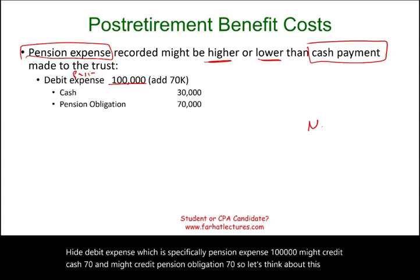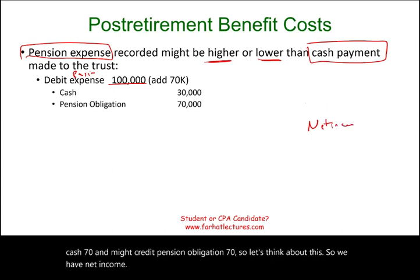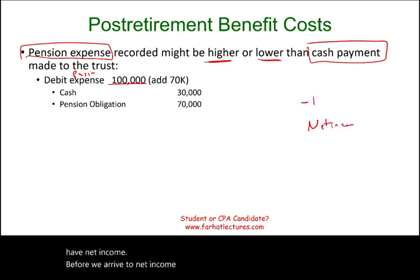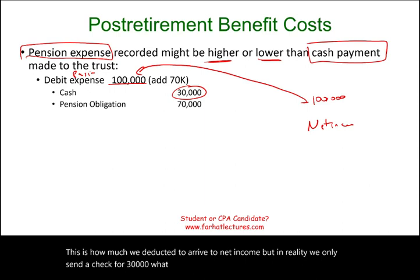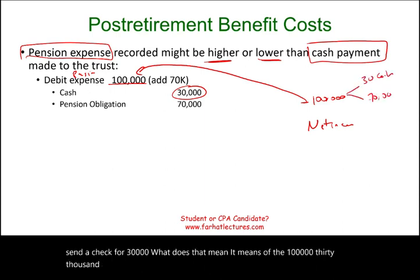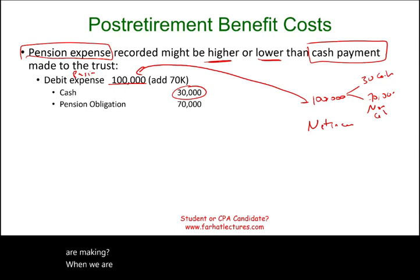So we have net income, and before we arrived at net income, we deducted $100,000 in pension expense. But in reality, we only sent a check for $30,000. That means of the $100,000, $30,000 was cash and $70,000 was non-cash. So when making the adjustment, we have to add back $70,000.